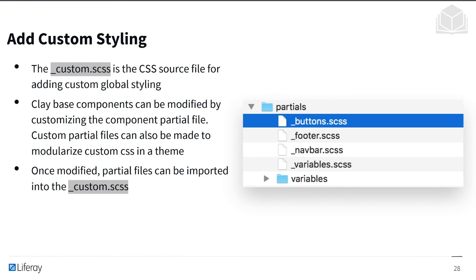The custom CSS is the source file for adding custom global styling. You put them in the custom partial. Now clay-based components can be modified by customizing the component partial file, and custom partial files can also be made to modularize custom CSS in a theme. On the right, you can see different partials for each of the different components, such as buttons, the footer, the nav bar, and variables.